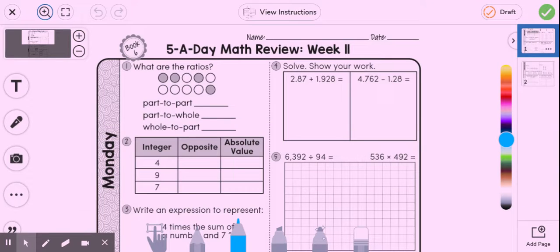All right, this is our math warm-ups, week 11. This is Monday. Number one, it says what are the ratios? We're going to do part to part. So how many are shaded? There are one, two, three, four that are shaded.